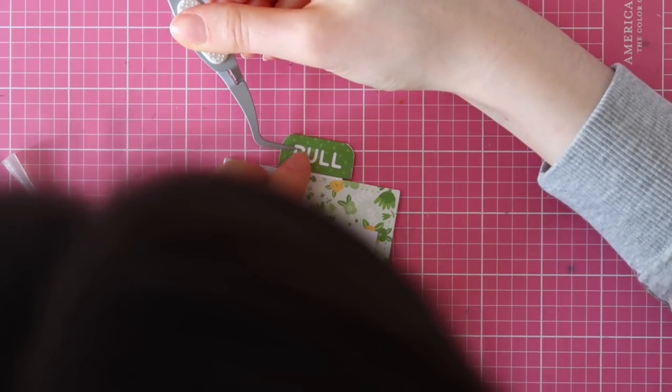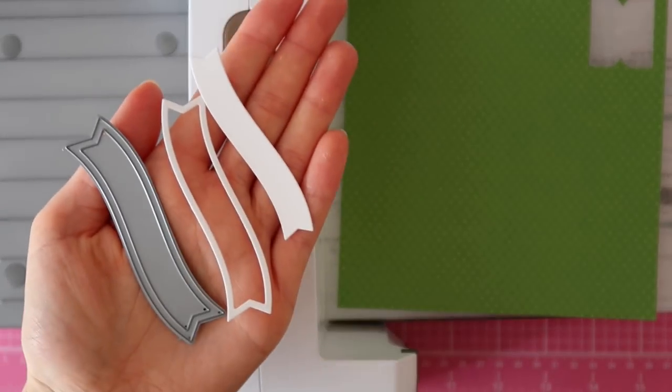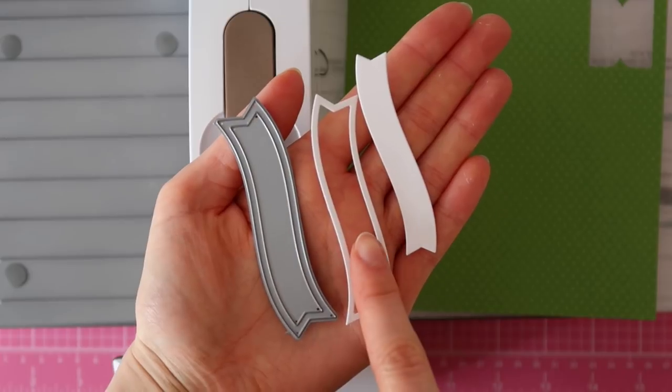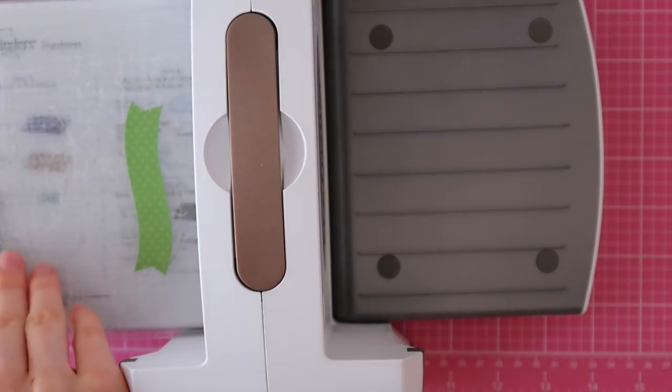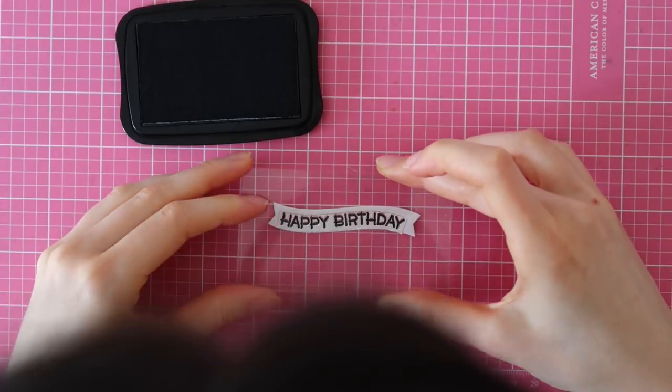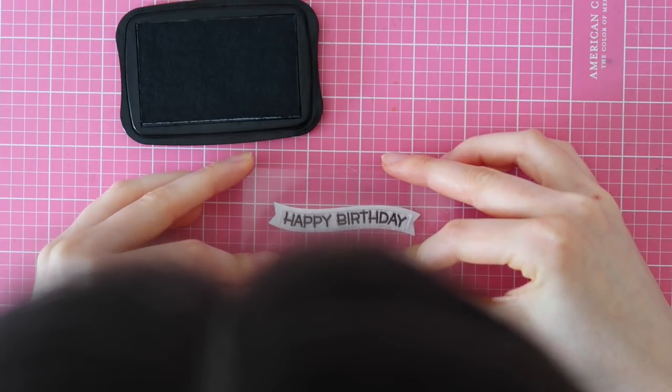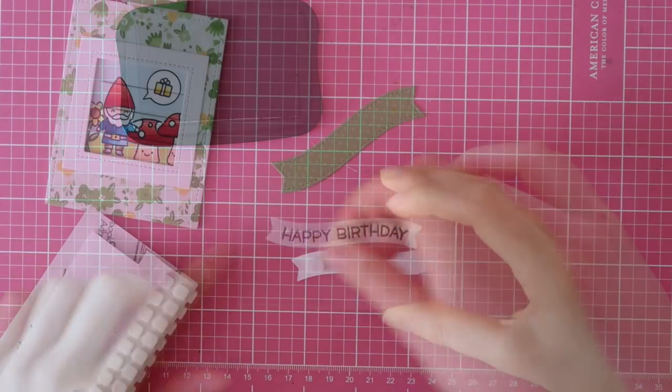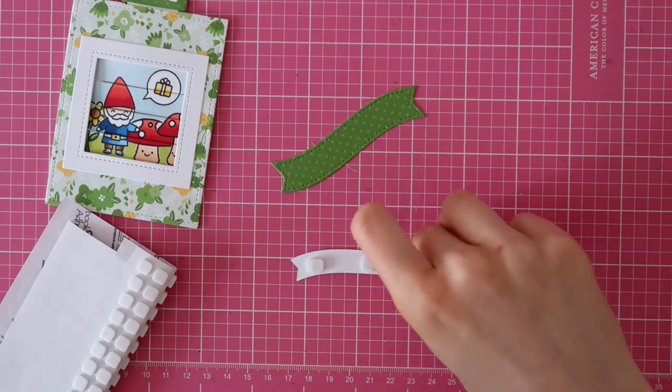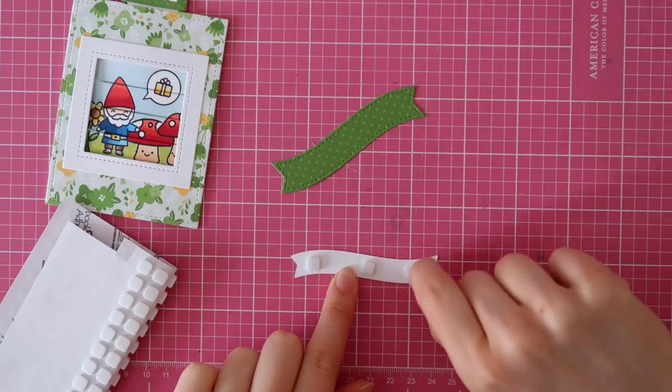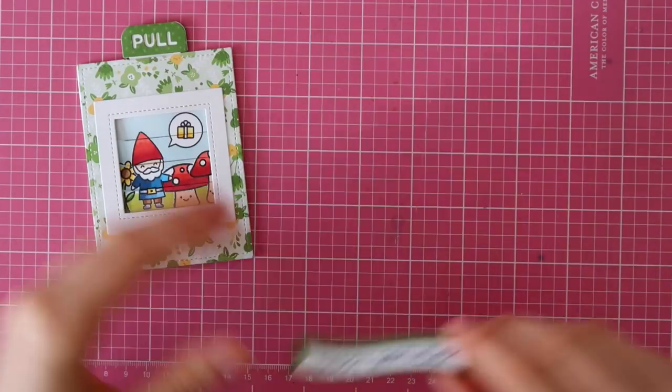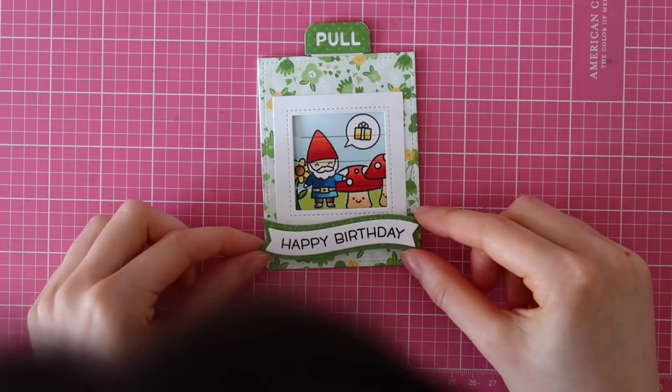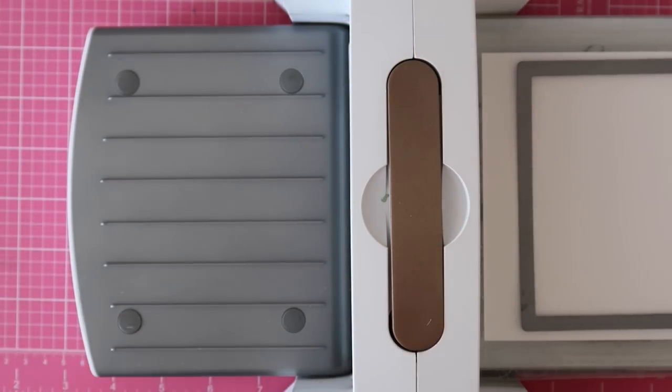Now that my magic picture changer is done, I'm going to create a sentiment. I used the Fancy Wavy Banners die cut set from Lawn Fawn to die cut this white banner out of some white Neenah cardstock. Then I'm going to die cut one more banner using some pattern paper. And this one has a stitched edge. So I'm going to stamp my sentiment that says Happy Birthday. This is from the Wavy Banner Greetings stamp set from Lawn Fawn. And I'm stamping that birthday sentiment using Memento Tuxedo Black ink. Then I'm using some foam squares to finish off my banner sentiment. I'm going to adhere the white on top of the pattern paper. And then finally, I'm going to adhere the banner on top of my magic picture changer, making sure that it doesn't touch the colored images because otherwise your magic picture changer won't be able to move.